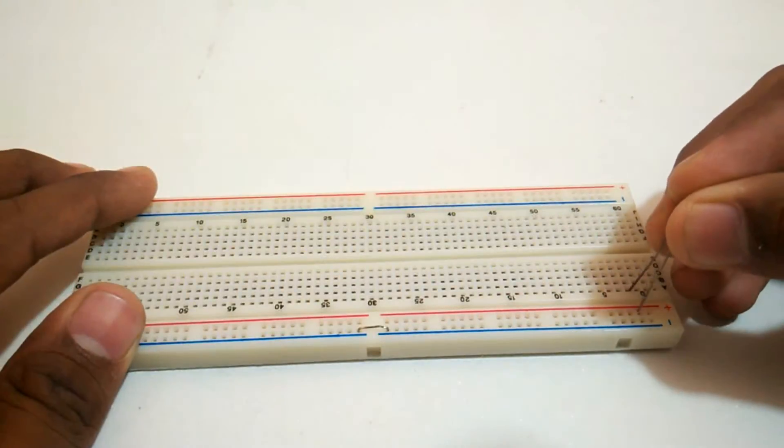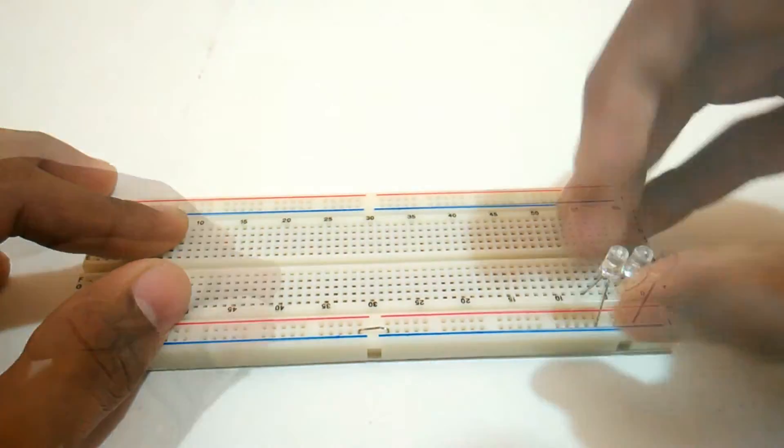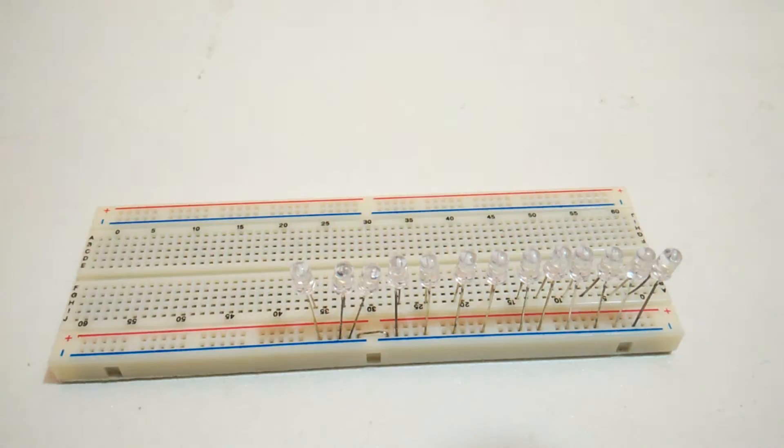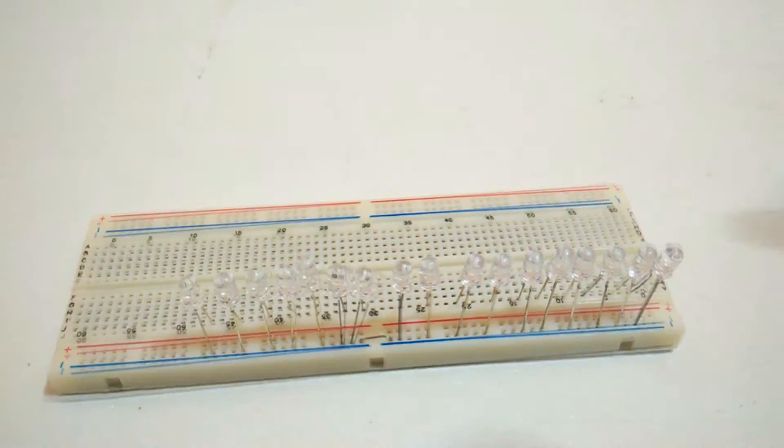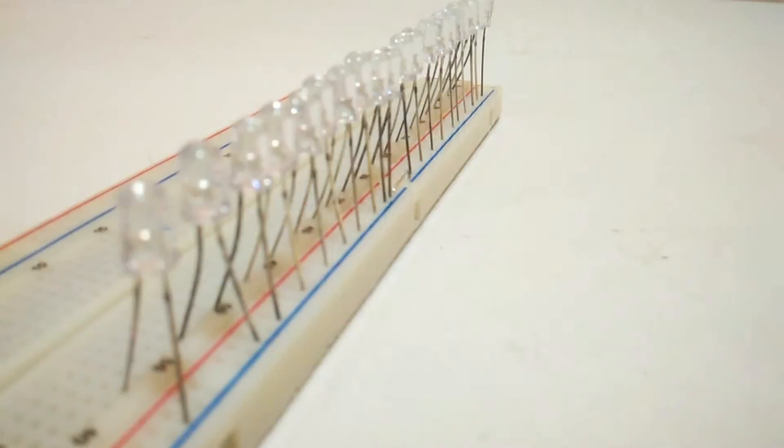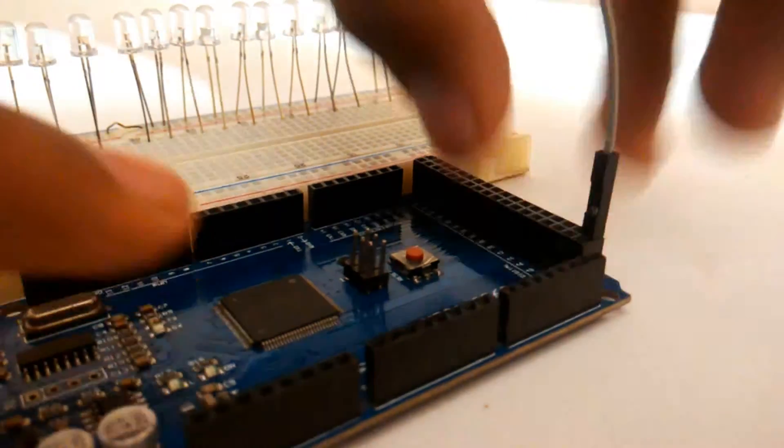Before constructing anything on the PCB directly, it's better to test everything on the breadboard. So I'll be inserting the LEDs on the breadboard, and the ground of the LEDs will go to a common ground layer. Now we can connect the Arduino's ground pin to the breadboard's ground.